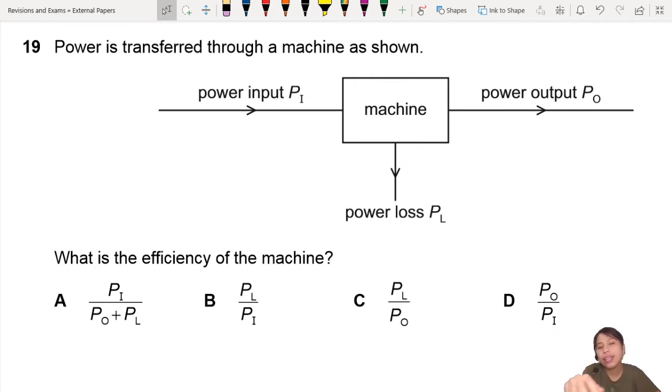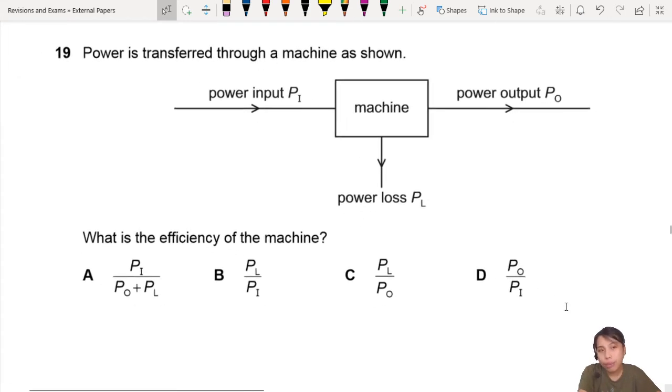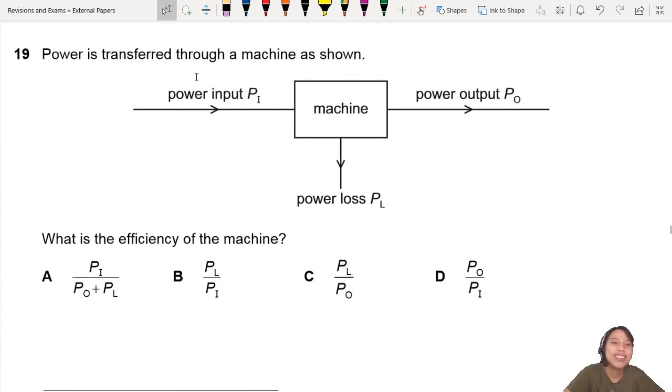What is the efficiency of the machine? Gotta remember the efficiency equation guys, if you don't remember it you'd be quite confused. So efficiency, we use this symbol eta, and that will be the power output, what comes out, so this thing, over what goes in, so this one.